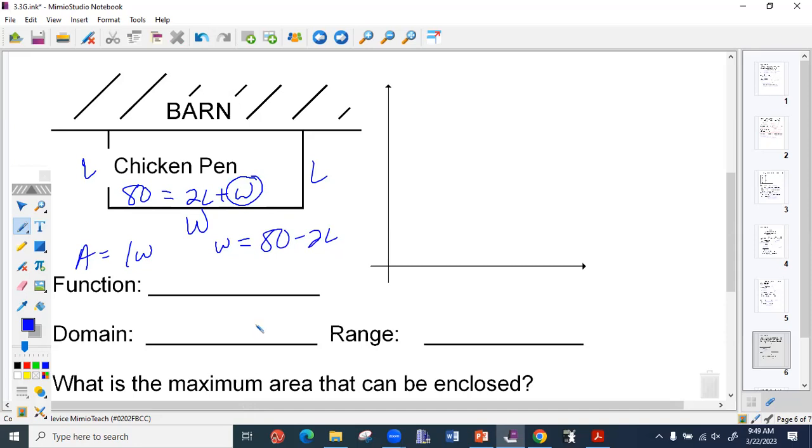I now know that W equals 80 minus 2L. Therefore, area can equal my length, but instead of putting W, I can put 80 minus 2L. So now I have my one function. I took two functions and made them friends.